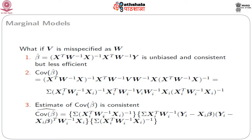Even if V is misspecified as W, the unbiasedness of β̂ does not change. β̂ is still unbiased, but the efficiency changes. The covariance of β̂ is not the usual form (XᵀW⁻¹X)⁻¹; rather it takes the sandwich form (XᵀW⁻¹X)⁻¹ (XᵀW⁻¹ΣW⁻¹X) (XᵀW⁻¹X)⁻¹. The standard form recovers when W = V.